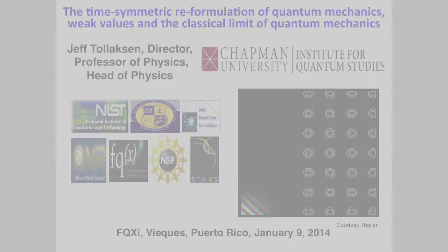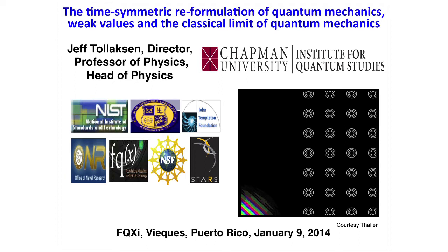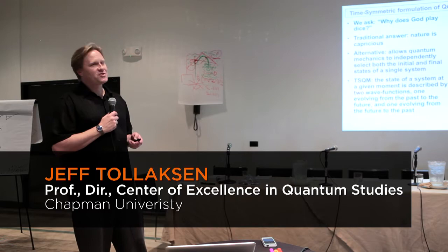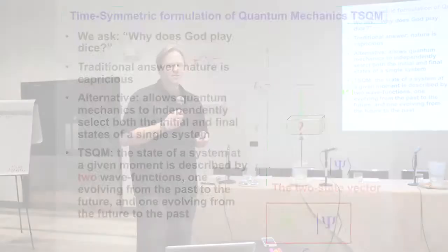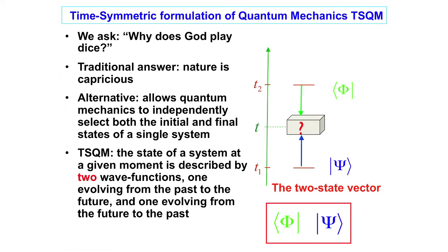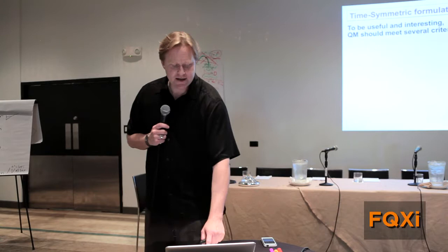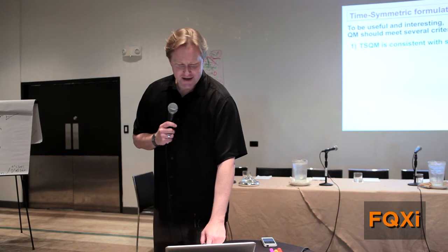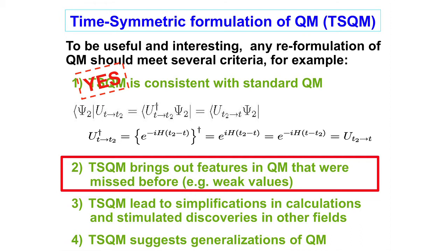Yeah, we're good. So I'm just going to quickly describe some work that I've been doing with Yakir Aharonov and his group. So the usual way of thinking about the uncertainty in quantum mechanics, according to Einstein, he says God does not play dice. We ask why. The traditional answer is that nature is capricious. So there's an alternative way of thinking about that, which is that quantum mechanics allows you to independently select two boundary conditions, one initially and one finally. And so this is a new kind of reformulation of quantum mechanics described in terms of two-wave functions instead of one. So this is a reformulation of quantum mechanics.